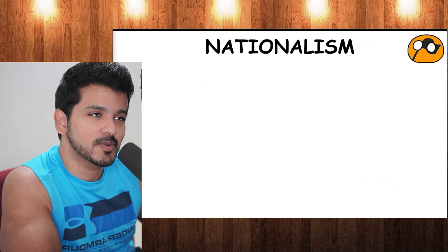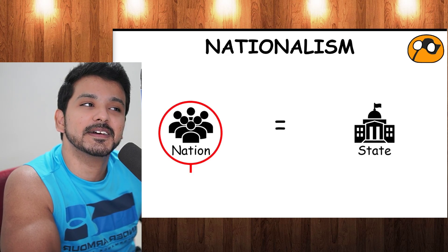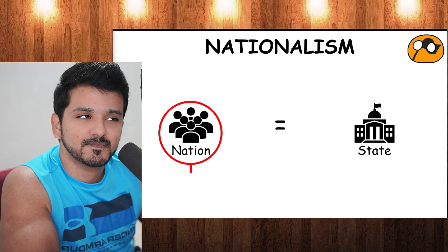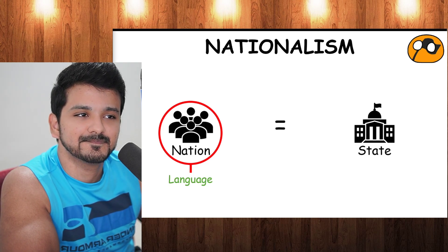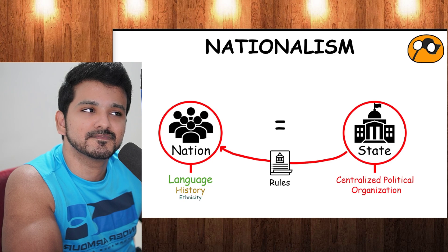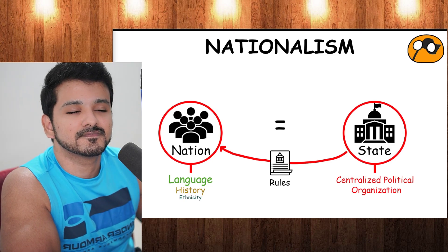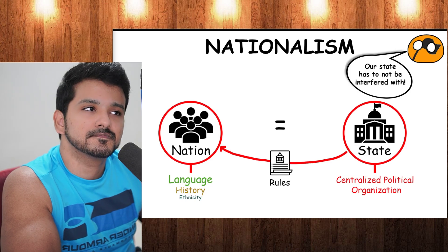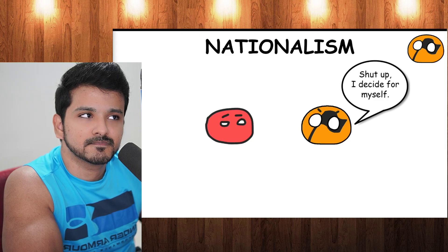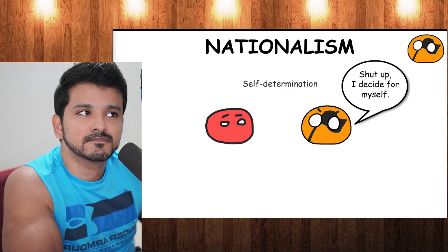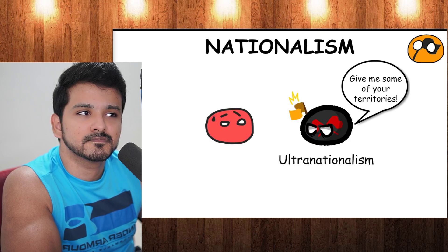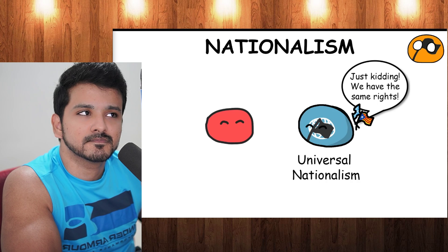Nationalism holds the belief that the nation should be congruent with the state. A nation is a large type of social organization where a collective identity has emerged from shared features across a population — such as language, history, ethnicity, etc. A state is a centralized political organization that imposes and enforces rules over a population within a territory. One of nationalism's key goals is to maintain sovereignty over its homeland, usually through a nation-state — holding that each nation should govern itself free from outside interference. When a nation puts its own interests above all others at any cost, it's called ultranationalism.